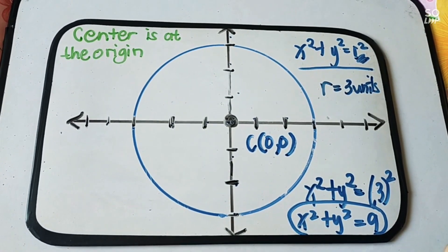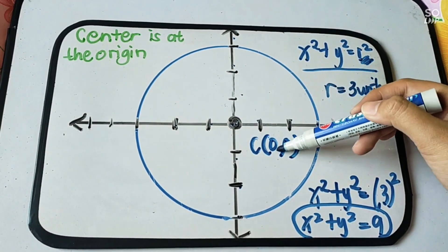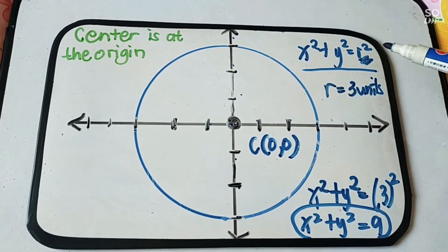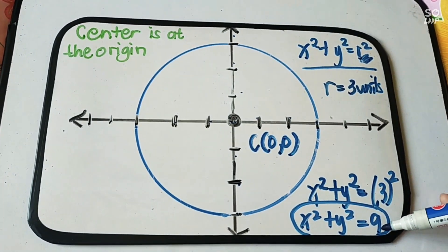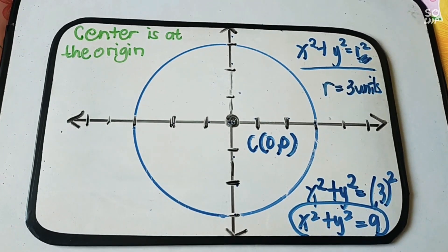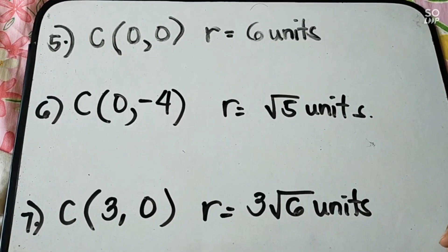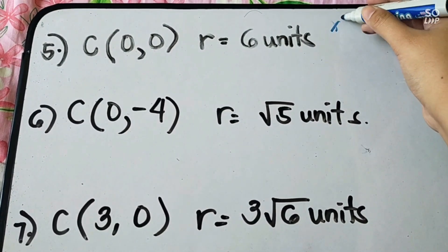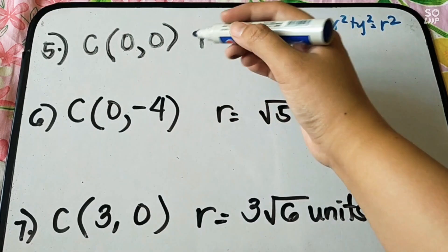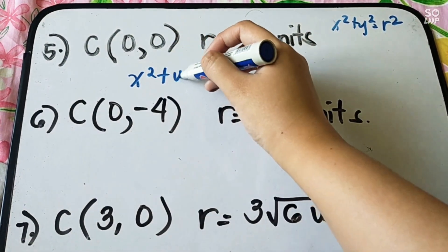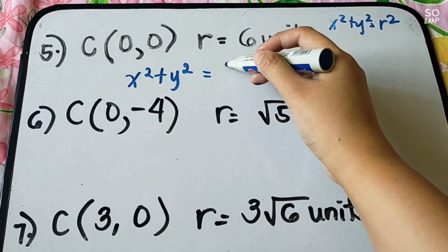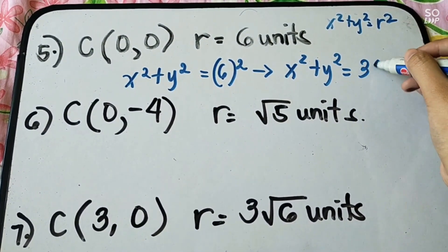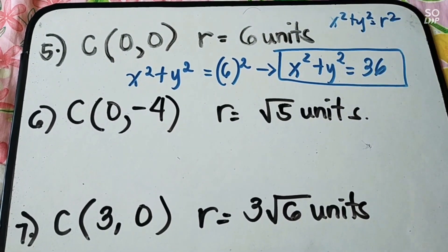When the center is at the origin, or center is (0, 0), this is your standard form: x squared plus y squared equals r squared. You only replace r, which is the radius. Example 5: center (0, 0) and r equals 6 units. Using x squared plus y squared equals r squared, substitute r equals 6: x squared plus y squared equals 36. That's your standard form.